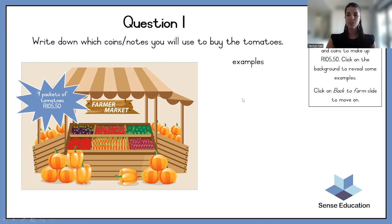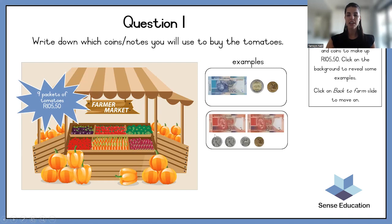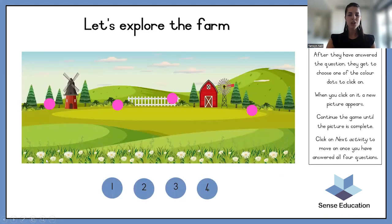Pause this video and write down a few options, then let's see if we have the same examples. You can do 100 rand, 5 rand, and 50 cents. You can also do 50 rand, 50 rand, 2 rand, 2 rand, 1 rand, and various combinations of coins to make 105 rand 50 cents. Good job! Let's see our first picture — the farm rake.